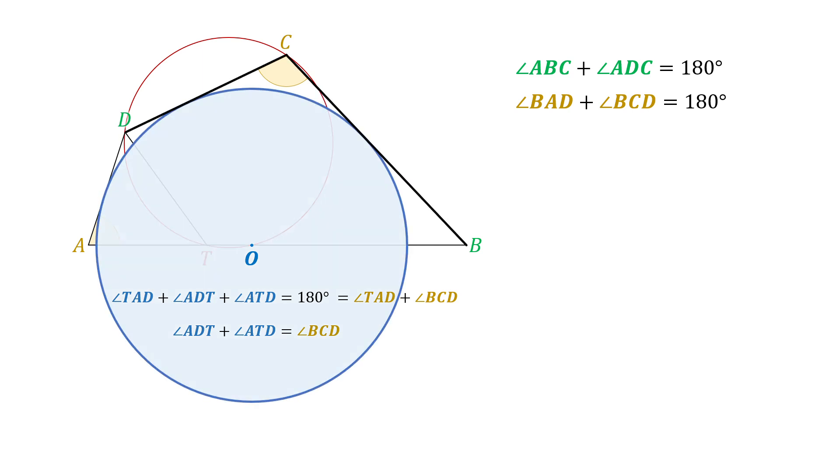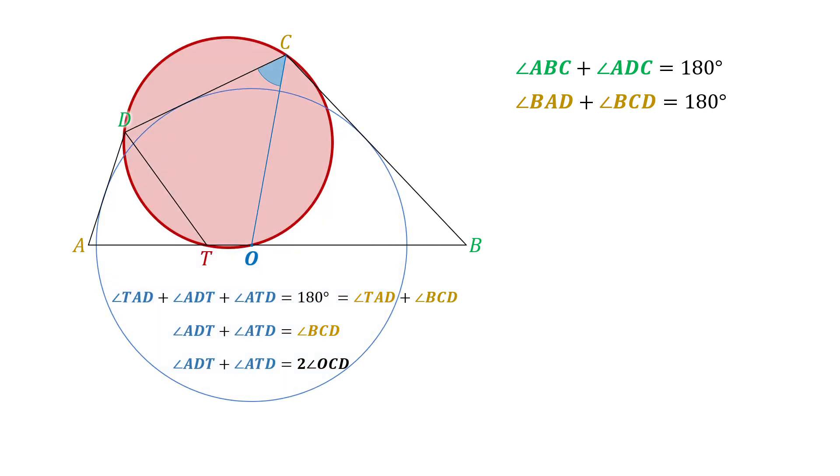Since CB and CD are tangent to circle O, OC bisects angle BCD, and we know that angle BCD is twice angle OCD. OCDT is cyclic, which means angle OCD and angle ATD are equal.